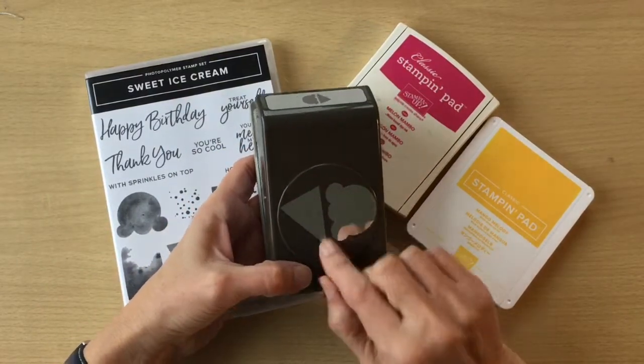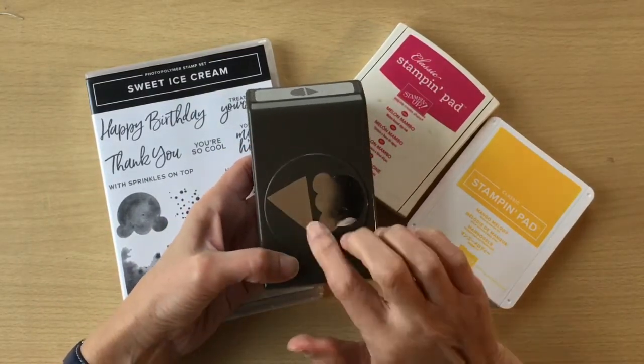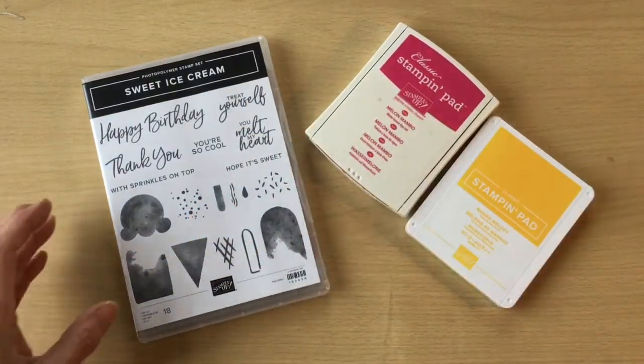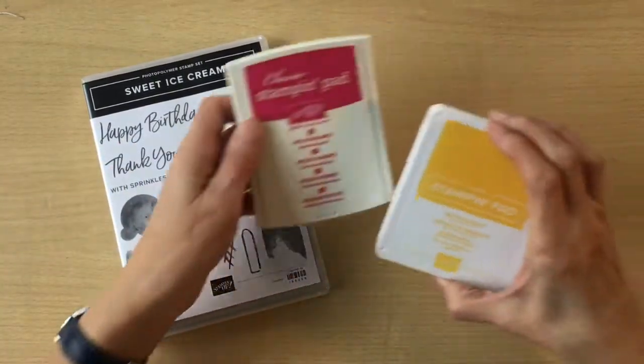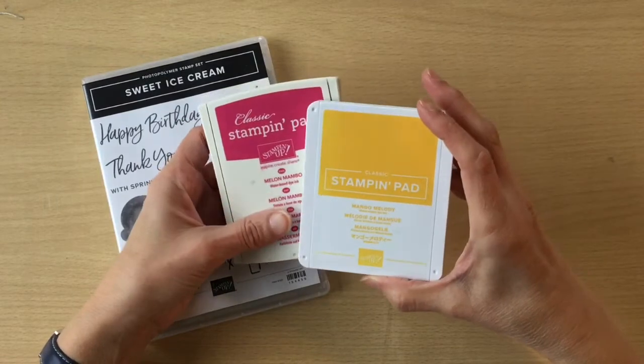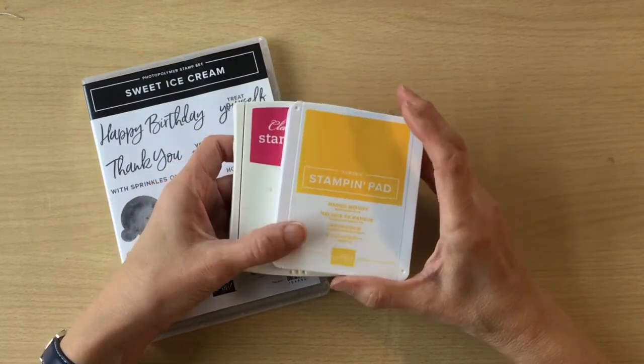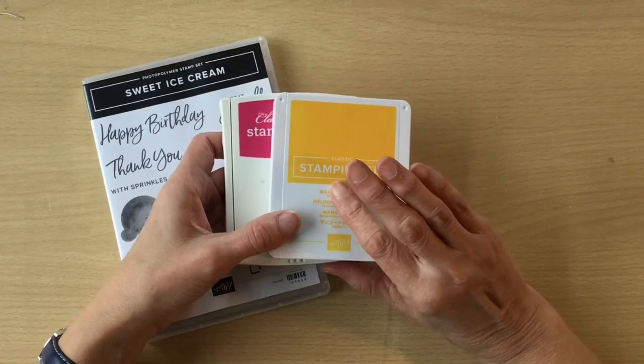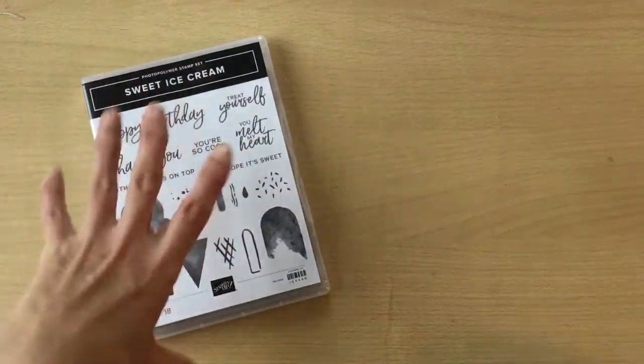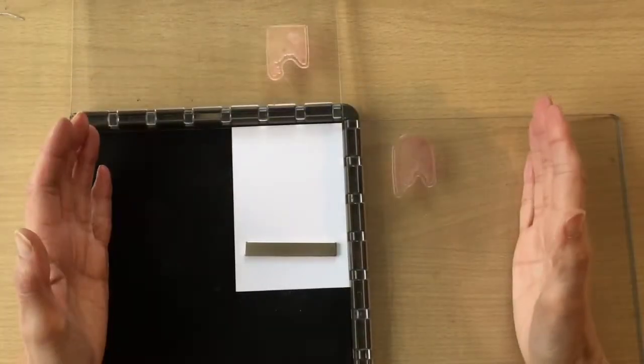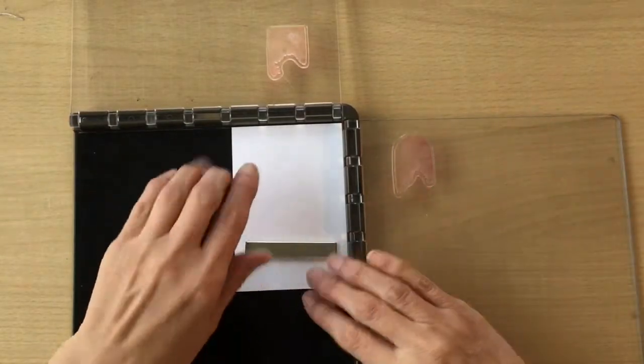If you don't have the punch, I'm just using the triangle so you could cut some triangles out by hand. I'm going to be using Melon Mambo and Mango Melody as my ink colors, also using some Bermuda Bay and Whisper White. I'm going to start with some stamping using the stamp apparatus today.